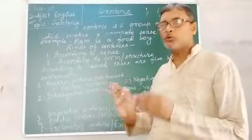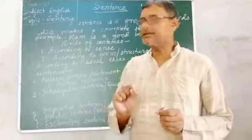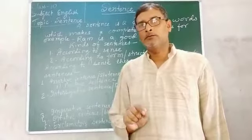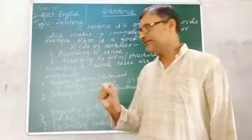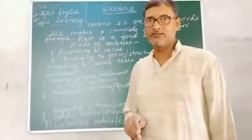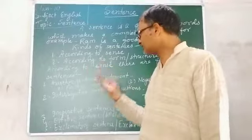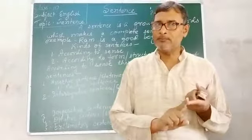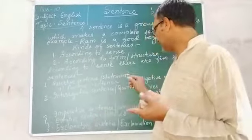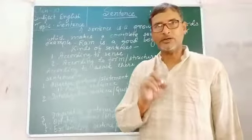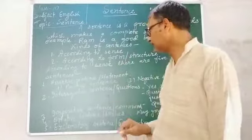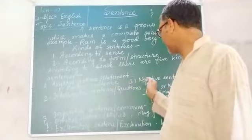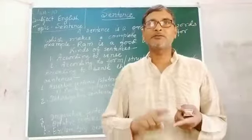If there is no negative word in the sentence, then it is a positive sentence. If it has 'not' or 'no' in the sentence, then it is called a negative sentence. An assertive sentence always ends with a full stop. Example of positive sentence: Ram goes to school. Example of negative sentence: Ram doesn't go to school.